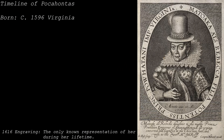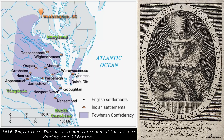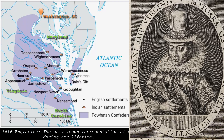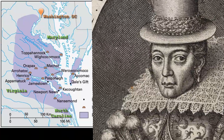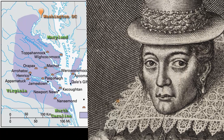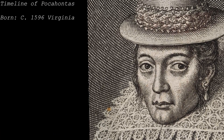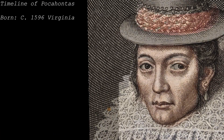Pocahontas, whose birth name was Mato Aka, was born around 1596 as the daughter of Wahunsenaka, the chief of the Powhatan Confederacy — an area located in parts of present-day Virginia, Maryland, and North Carolina. He was the high chief over all the smaller tribes in the confederacy. Her mother unfortunately died in childbirth, but Pocahontas was surrounded by love from her father's many wives and children.